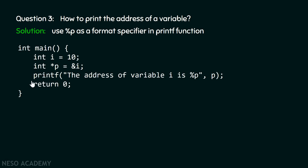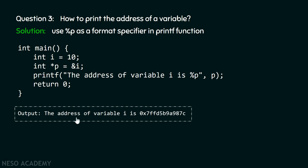For example, if we have a program with a main function containing four statements: in the first statement we have variable i containing value 10, and then we have a pointer p pointing to variable i. With the help of this pointer, we print the address of variable i using printf. By writing the format specifier as `%p`, we can print the address of variable i on screen. The output of this program is the address of variable i: `0x7ffd5p9a987c`.